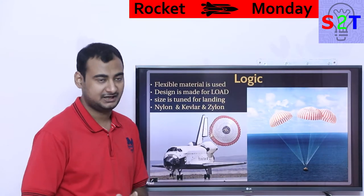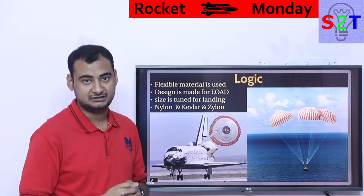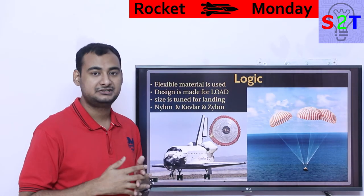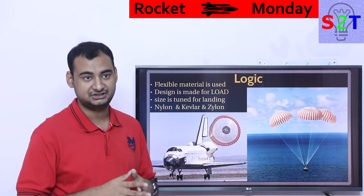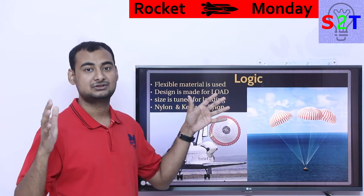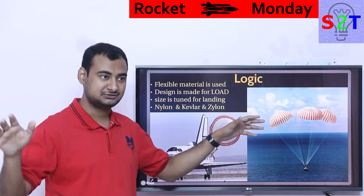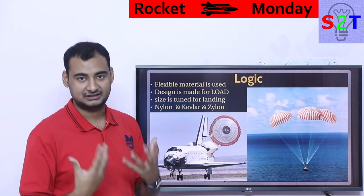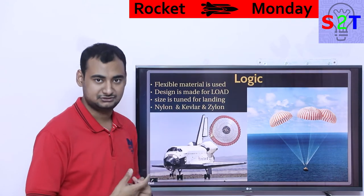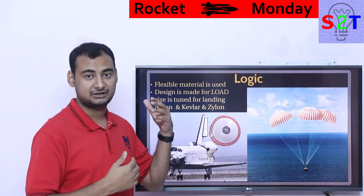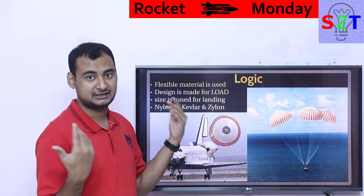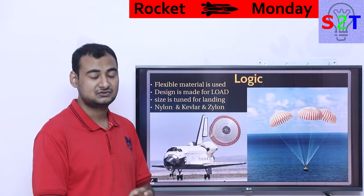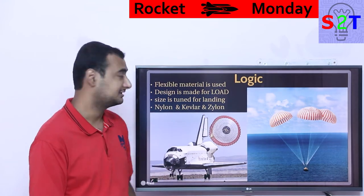The logic behind parachute design uses flexible materials because when you are fighting against the atmosphere, rigidity is your worst enemy — you have to flex with it. If you watch a jumbo jet landing you can literally see the wings flexing. When you are dealing with something moving at supersonic speeds, you really need to be flexible. That's why the most flexible materials are selected.